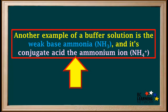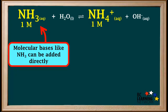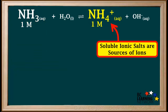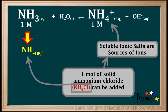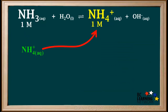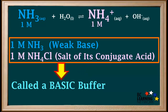Another example of a buffer solution uses the weak base ammonia, NH3, and its conjugate acid, the ammonium ion, NH4+. Molecular bases like NH3 can be added directly. NH4Cl will dissociate into NH4+ and Cl- ions. The chloride ion is not part of this buffer, so it acts as a spectator ion and can be discarded, leaving us with the ammonium ion, which is part of this buffer solution. This buffer is prepared using the weak base NH3 and a salt of its conjugate acid, NH4Cl. Buffers prepared with a weak base and a salt of its conjugate acid are called basic buffers.